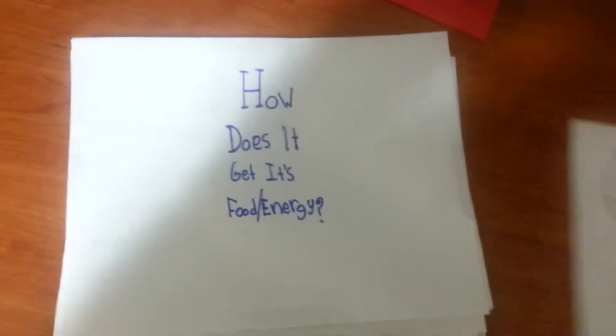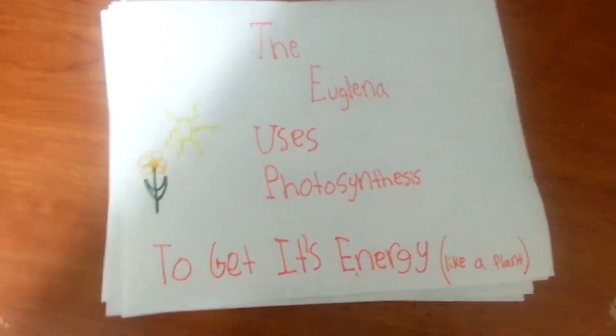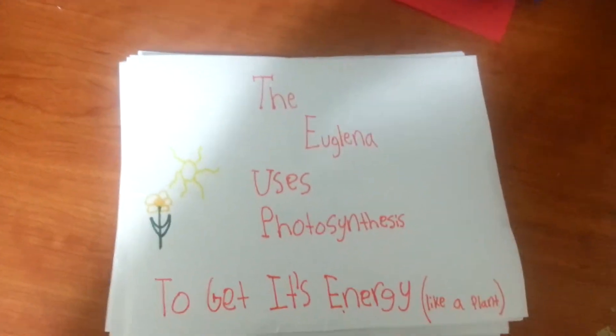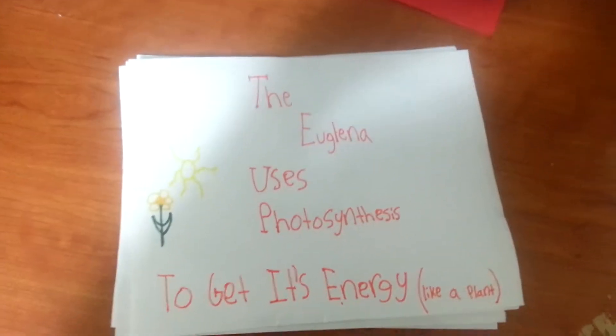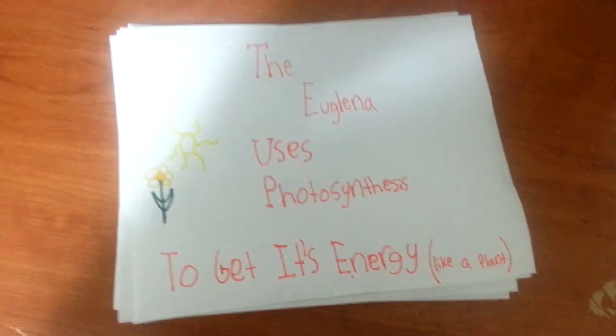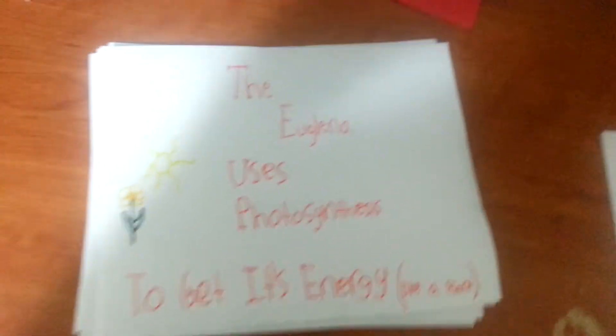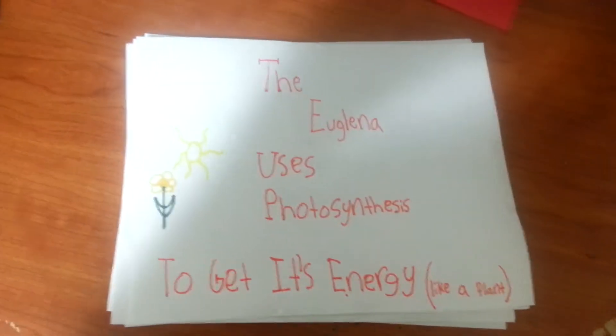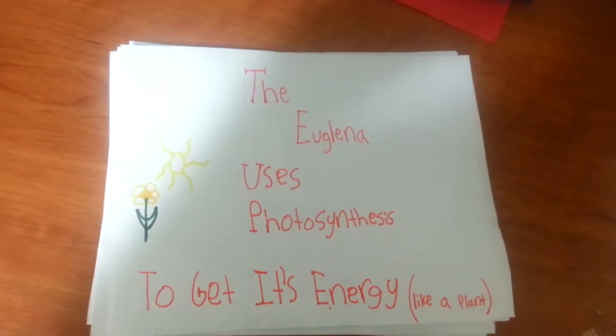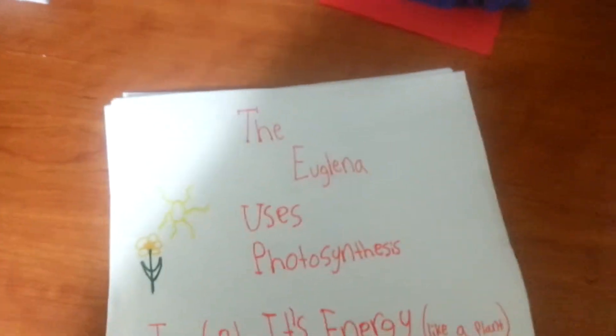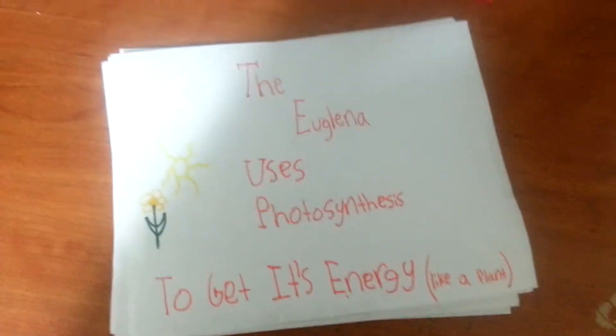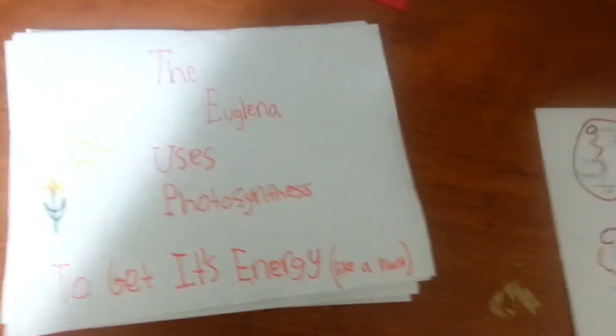How does it get its energy? Well, the euglena gets its energy using photosynthesis, like a plant, a heterotroph. It can also be an autotroph, because it can be both, so when it doesn't get food, it can just make its own food.